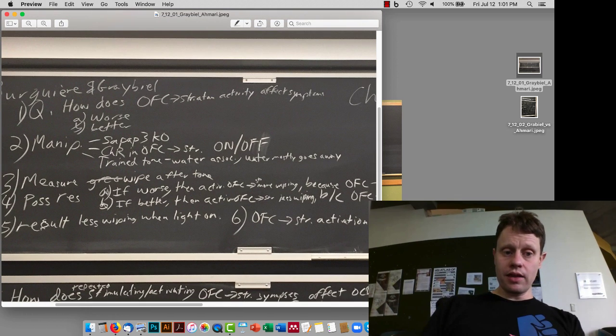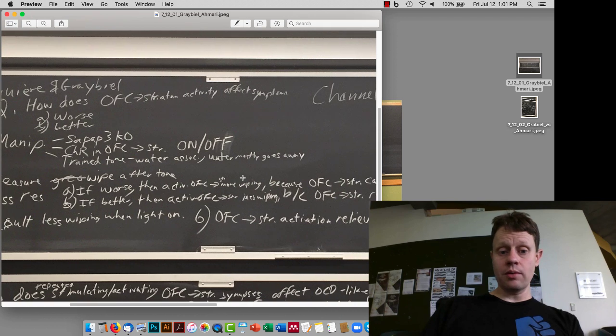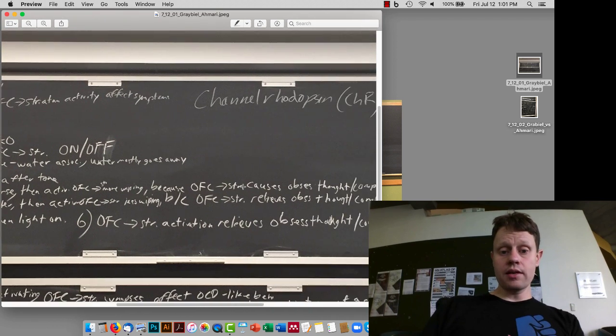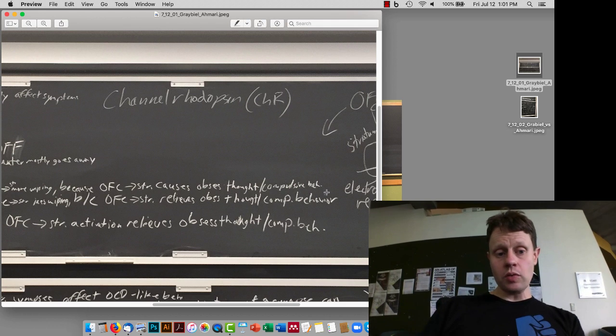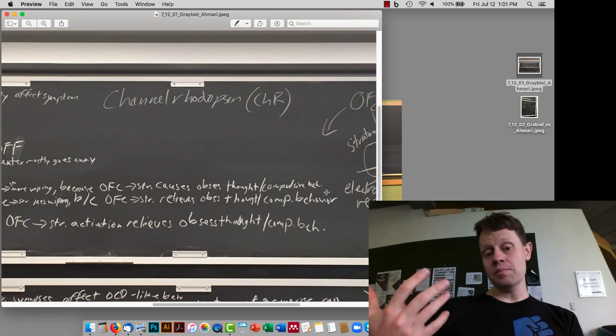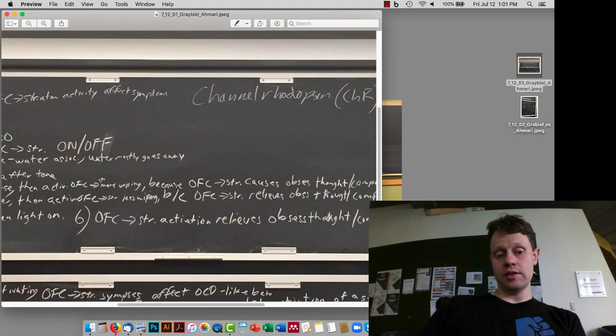Possible results: if the things were getting worse, then activating the OFC we'd observe more wiping because something about the OFC, the striatum, causes obsessive thoughts and compulsive behaviors. This is not too out of the blue because we know already that in a lot of situations the orbital frontal cortex is more active in people with OCD.